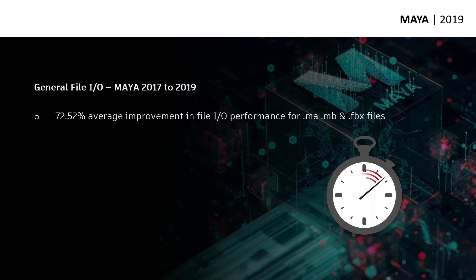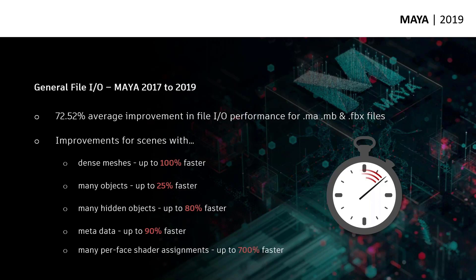This is based on a lot of different benchmarks and improvements we've made. For dense meshes, we're seeing performance improvements with loading up to 100% faster. For many objects — large environments and scenes with lots of nodes — loading is up to 25% faster. We optimized hidden objects that were being evaluated unnecessarily, so scenes load up to 80% faster when objects are hidden. Metadata associated with low-level components like faces or vertices improves load times up to 90%. And per-face shader assignments — shaders assigned to components rather than objects — are now 700% faster, essentially seven times faster.